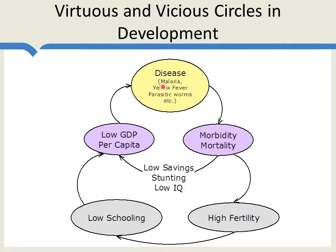Now let's take a look at one of the vicious cycles. When we start off with disease — malaria, yellow fever, worms — that leads to morbidity and mortality, which directly lowers GDP. It also means low savings, stunted people especially when hit by these diseases as young children, and low IQ. This again leads to low GDP per capita, which means you don't have the money to invest in sewage plants, clean water, vitamins, vaccines — all the things which can improve health. Disease leads to poverty, and poverty makes it very hard to get out of the disease cycle.